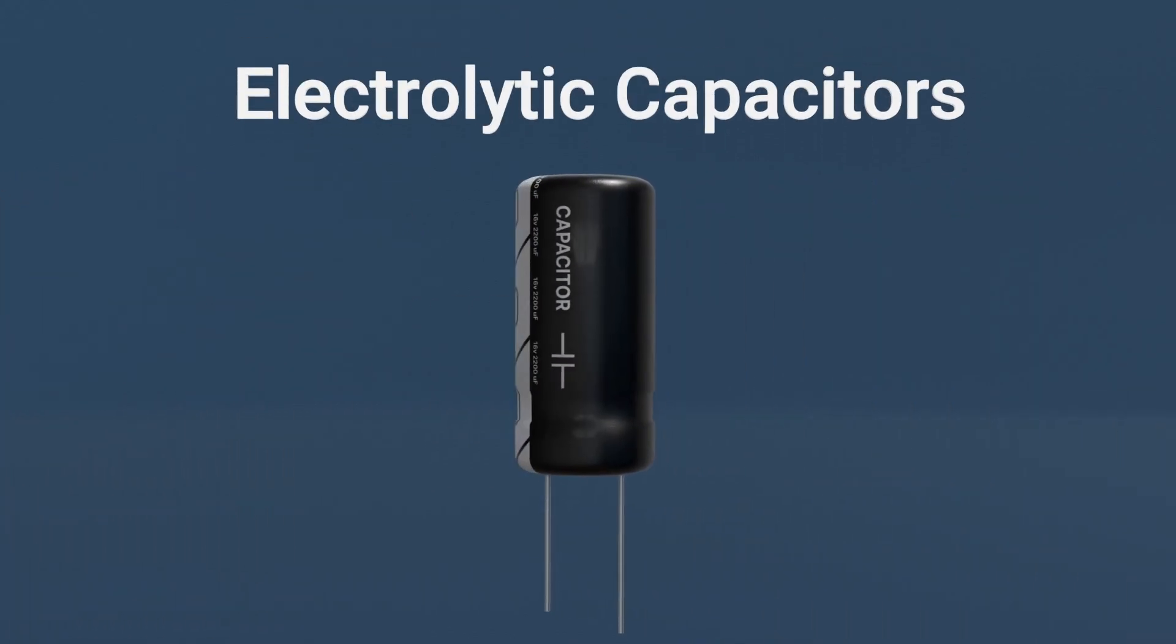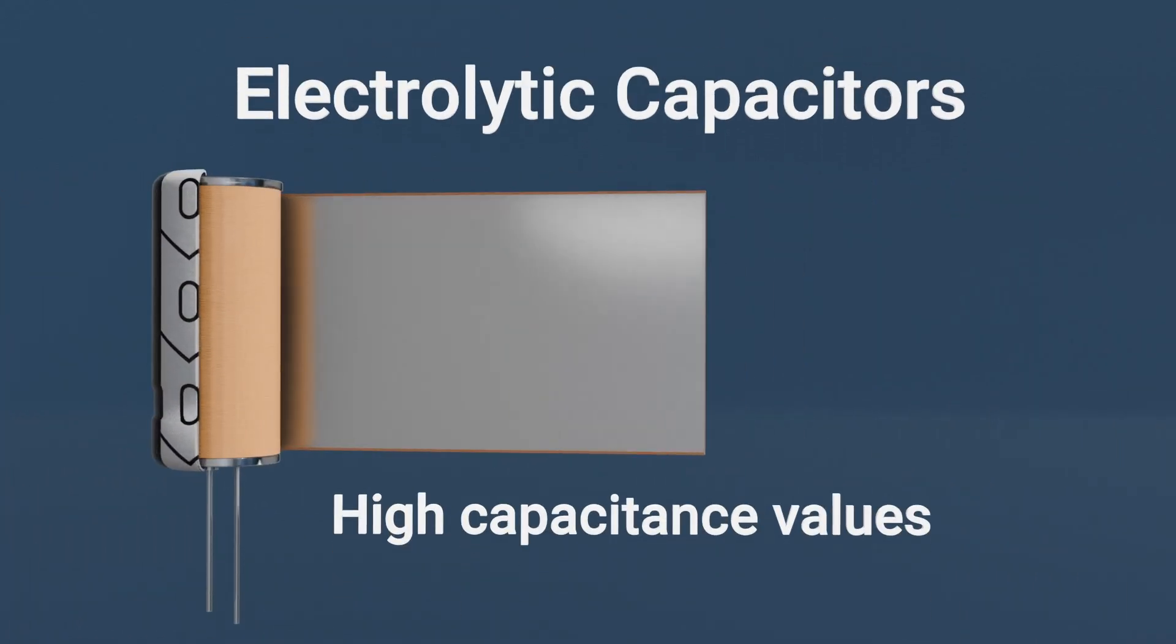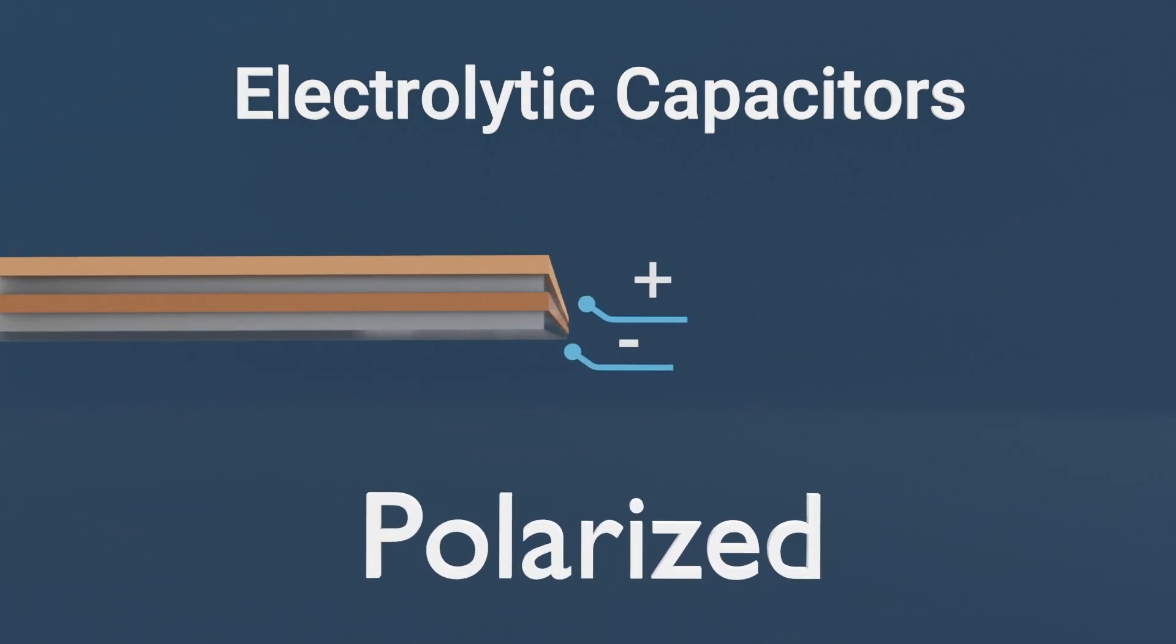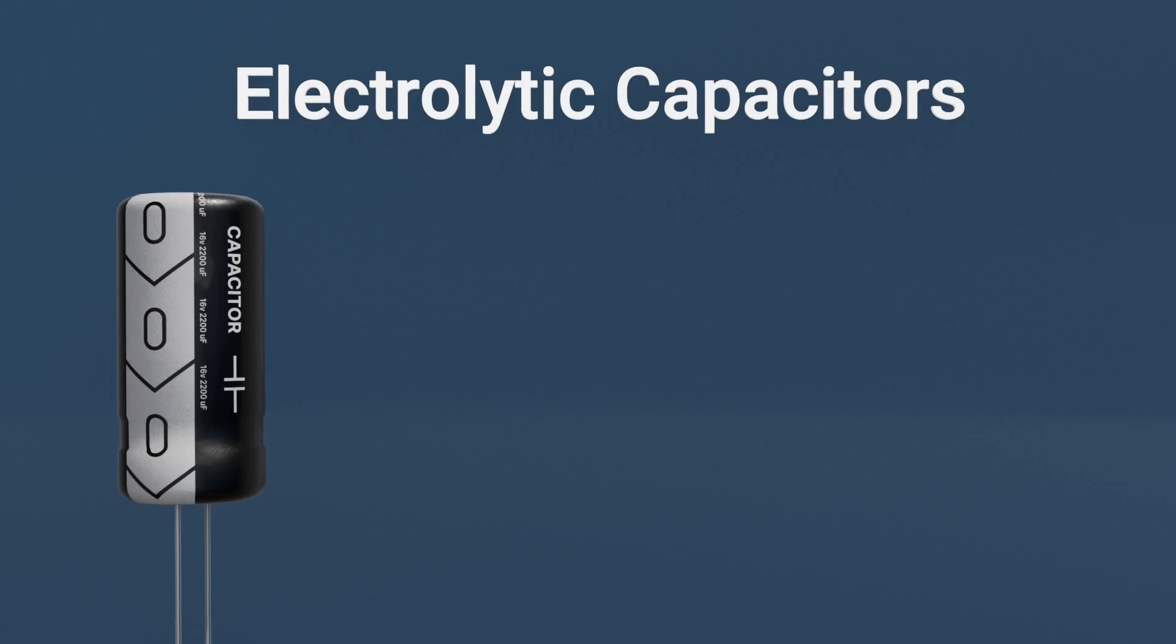Electrolytic capacitors: these have high capacitance values and are used in power supply filtering. They're polarized and can only be used in circuits with proper polarity.